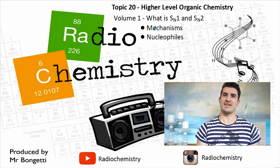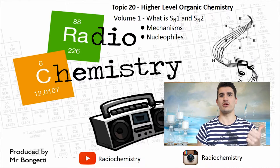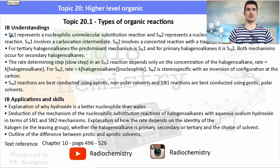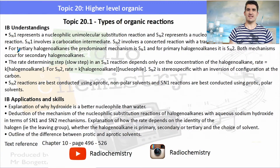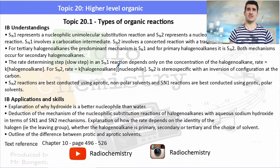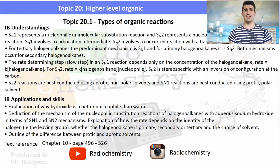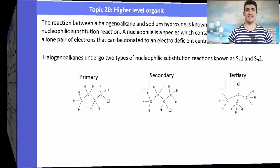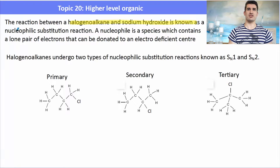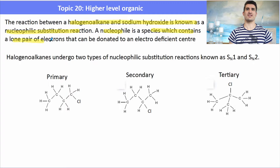Volume one: what are SN1 and SN2 reactions? We look at mechanisms and discuss nucleophiles. The IB understandings and applications focus around SN1 and SN2 reactions, the solvents necessary for those reactions, the mechanism, and some of the stereochemistry effects of the reaction.